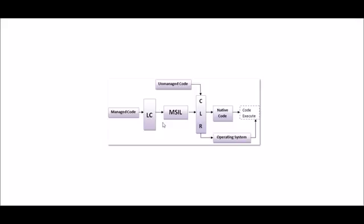How is managed and unmanaged code executed? Managed code is compiled by the language compiler, MSIL is generated, that MSIL goes to CLR, CLR converts it to native code, and the code is executed. For unmanaged code, if the language compiler doesn't generate MSIL, that source code goes directly to CLR and CLR redirects it to the operating system. The operating system is then responsible for the code execution process.